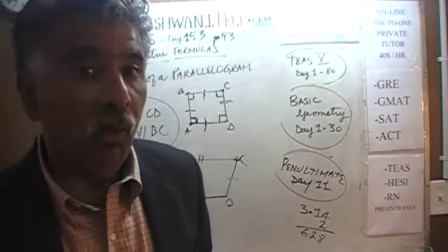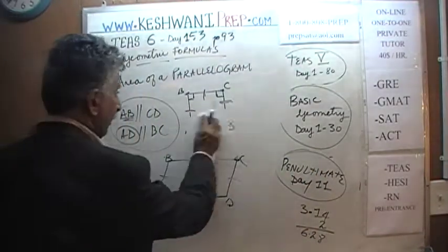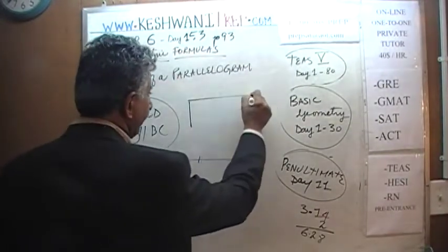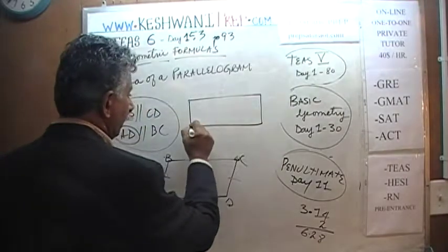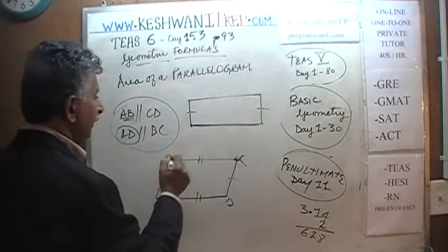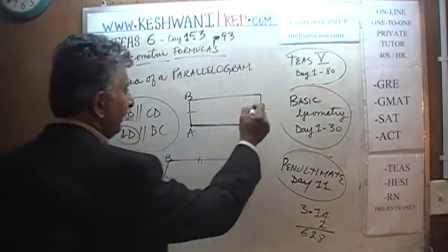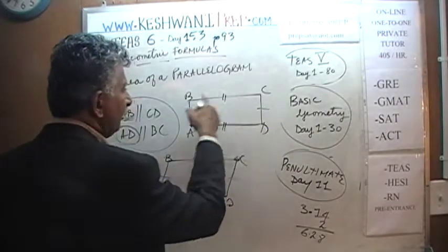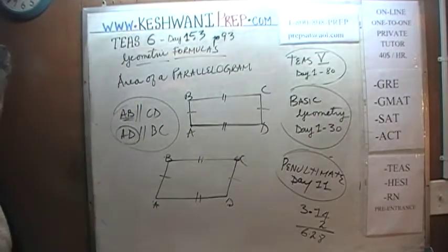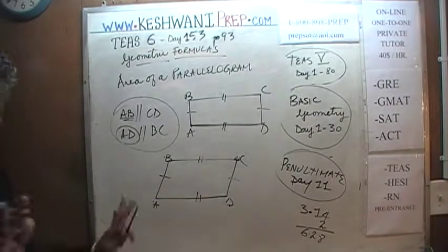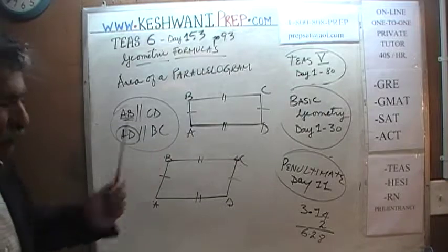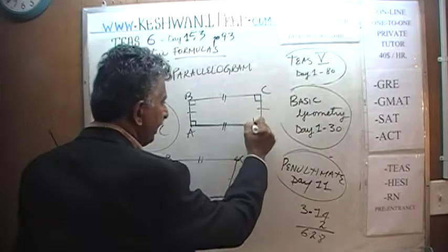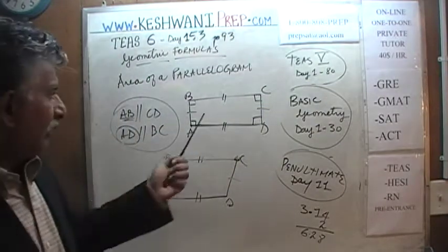Did you also know that all rectangles are parallelograms? Because what's a rectangle? A rectangle is where opposite sides are parallel. Side AB is going to be parallel to side CD, and side AD is going to be parallel to BC. It fulfills the parallelogram condition. But in addition to that, it has one more property: all the angles are 90 degrees. And if that happens, we call it a rectangle.